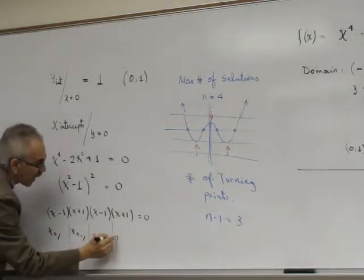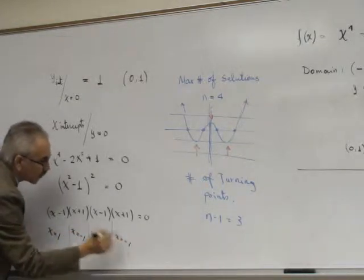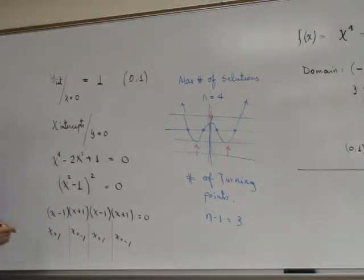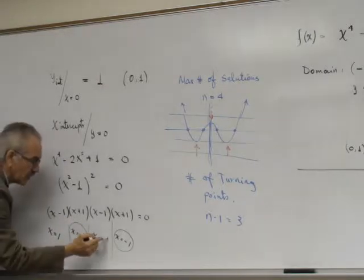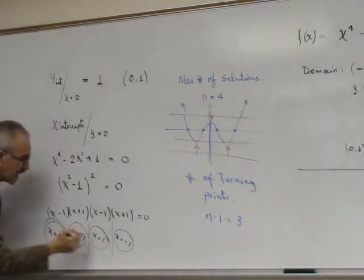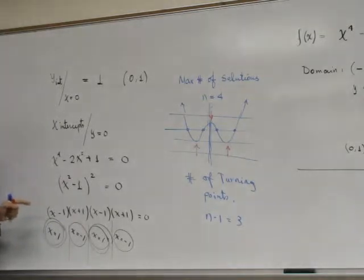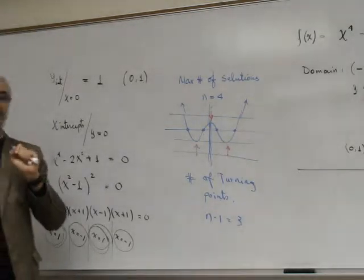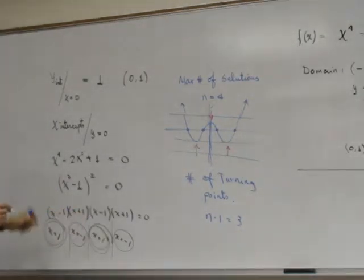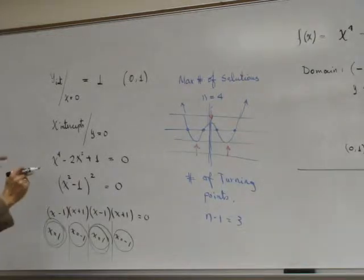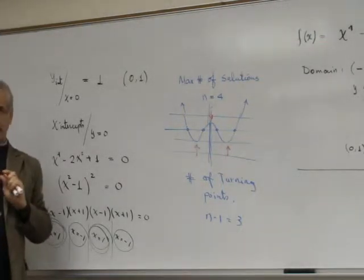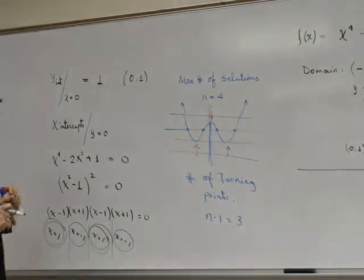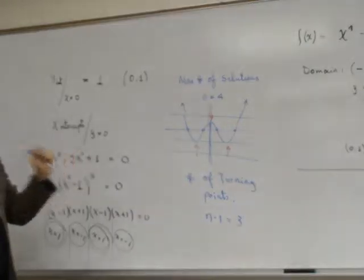But two of them are the same, the other two also are the same, resulting that we have only two solutions. But I want to use this example to explain one more property: multiplicity. What is multiplicity?